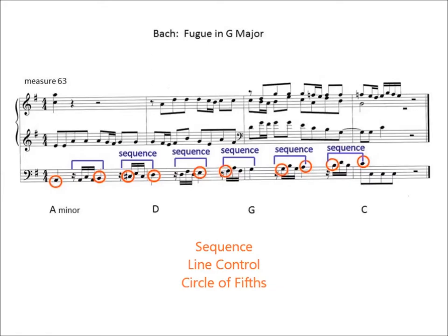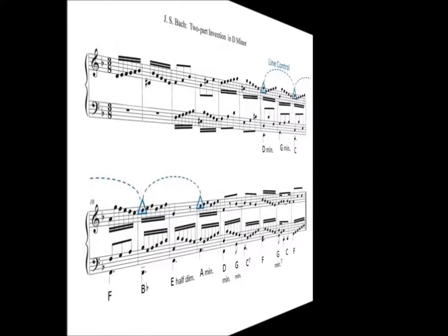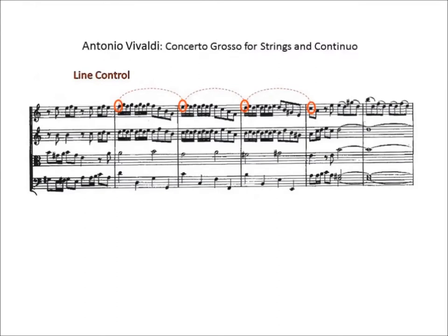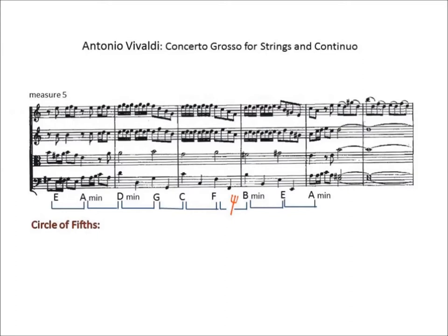It's quite neat — you've got the circle of fifths, sequence, and line control, all amalgamated into this passage. Especially in Baroque music, starting with Vivaldi, he does this sort of thing over and over again, having a line control and a sequence with the circle of fifths. Bach does it — all the big composers do it.